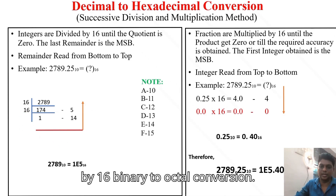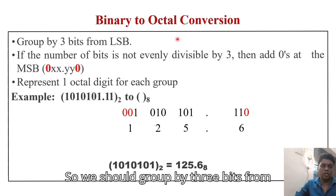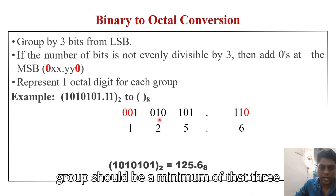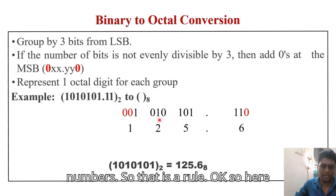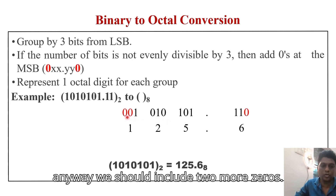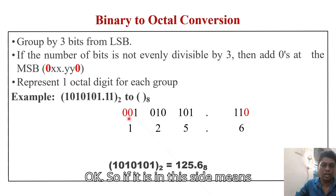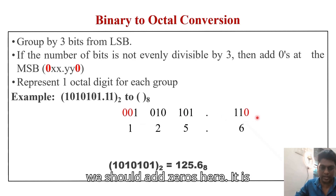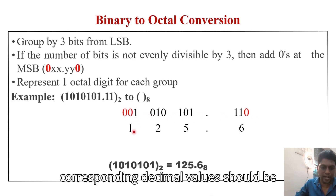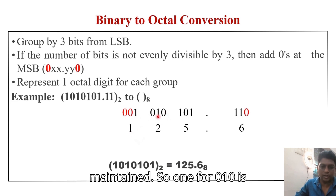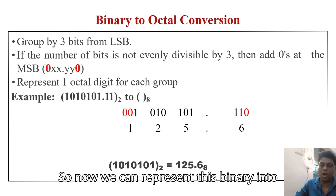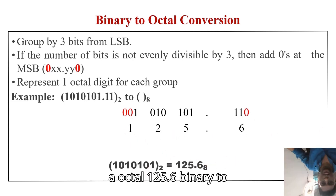For binary to octal conversion, group the binary digits into groups of 3 bits starting from the LSB. For example, 101 010 — if a group has fewer than 3 bits, pad with zeros on the left for the integer side (or right for the fractional side). The decimal values of each group: 010 is 2, 101 is 5, and 110 is 6, giving octal 125.6.